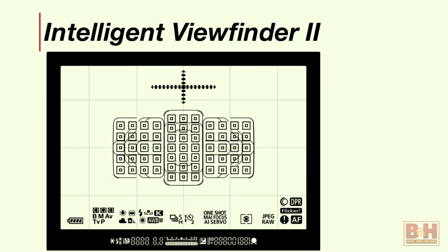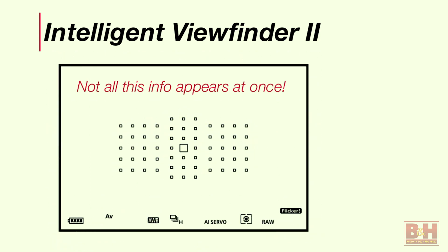When you look at the viewfinder of the new EOS 5D Mark IV, if you're coming from an earlier camera you'll see some new things. It's what we call an intelligent viewfinder II. The viewfinder display gives you an LCD overlay showing the location of all focusing points if you want, highlights active focusing points, shows a strip of camera settings along the bottom, and gives you a dedicated dual-axis level display at the top — right through the finder itself, so even hand-holding you can tell if you're level.